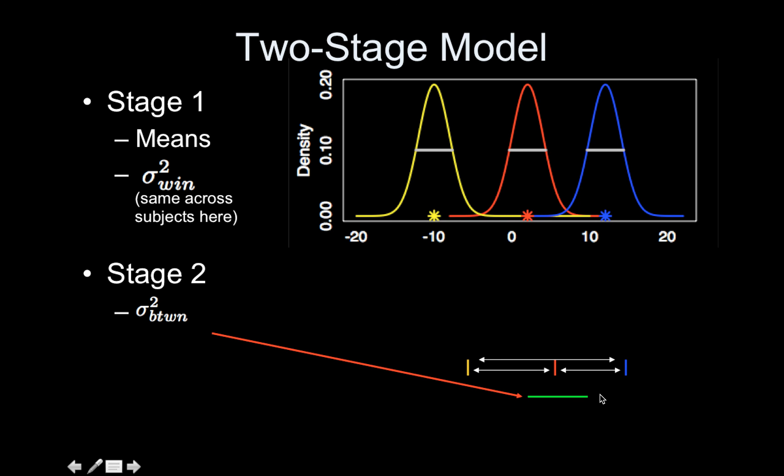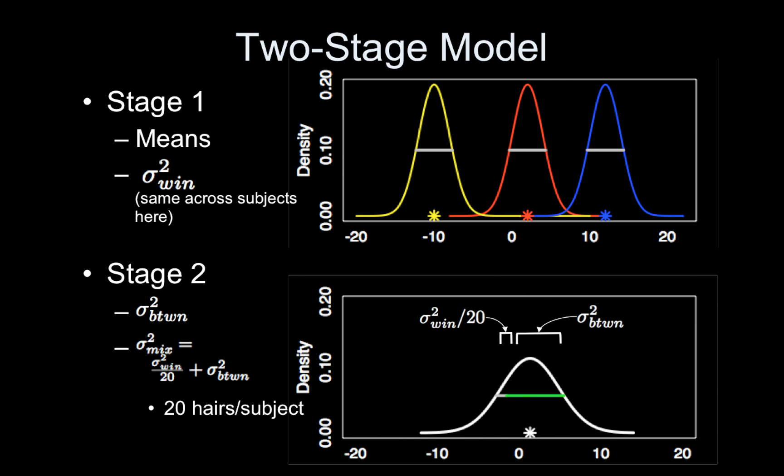Why is it so small? It was big and now it's small because we have 20 hairs. So I take this, divide it by 20, and that's added on. So this is illustrating how the between-subject variance dominates our overall population distribution. And you can see that if we add more hairs, all it's doing is shrinking this little chunk over here, which is already pretty small. And then we get the population distribution.